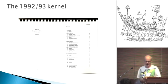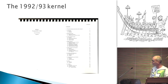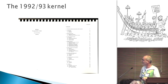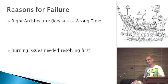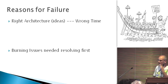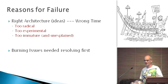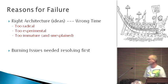This is actually a screenshot of this manual which I still have, processed in this kernel that we did back then. It took ages to compile but that's the code we had. So why is it not actually there? Well, reasons for failures. Basically, I would say we had the kind of right architecture but it was the wrong time. We were quite a bit too radical in what we were trying to do back then and it was too experimental and it was immature.